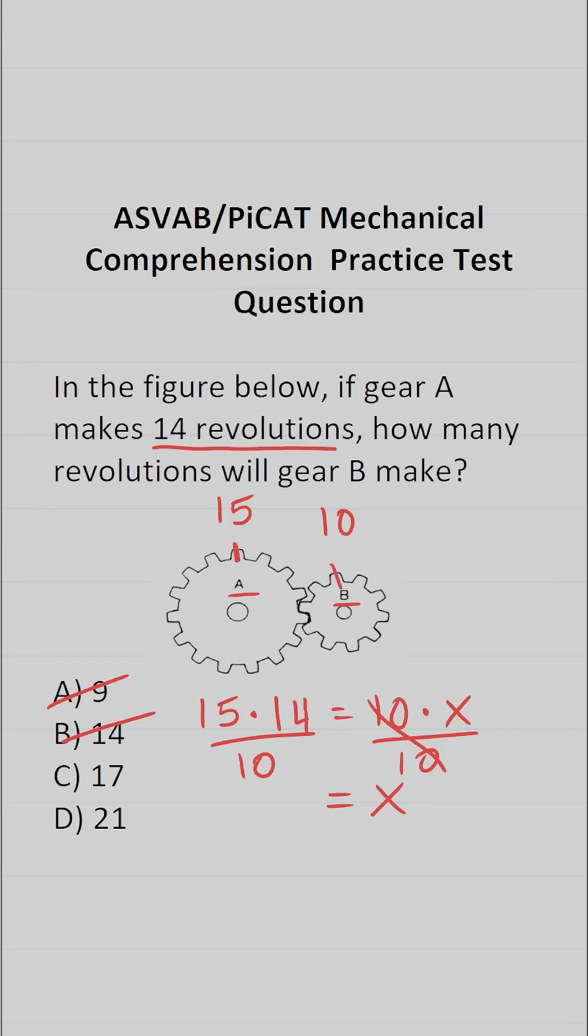Let's go ahead and simplify this. I know 5 goes into 10 2 times, and 5 goes into 15 3 times. This becomes 3 times 14 over 2.